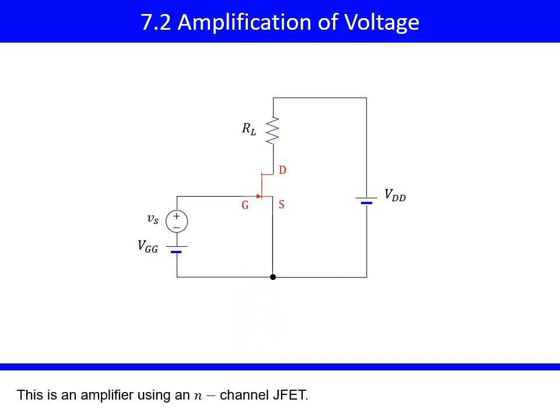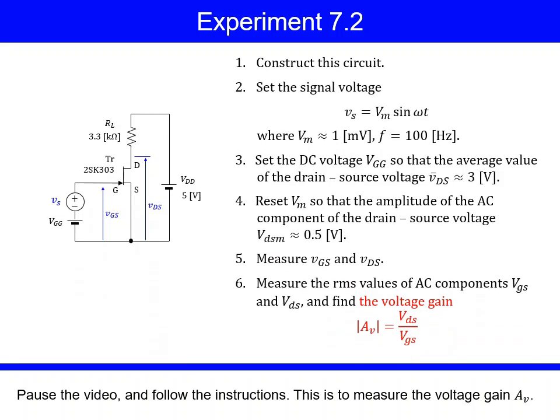This is an amplifier using an N-channel JFET. Experiment 7.2: Pause the video and follow the instructions. This is to measure the voltage gain AV.